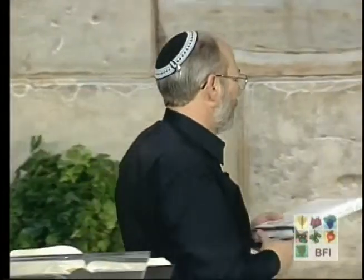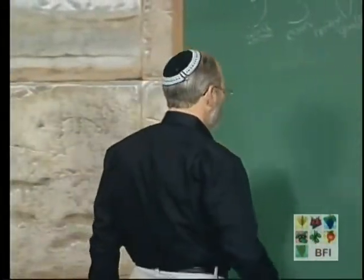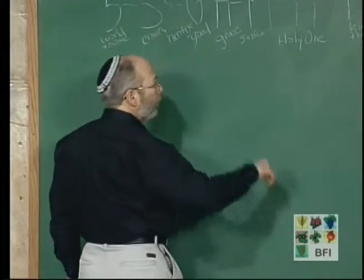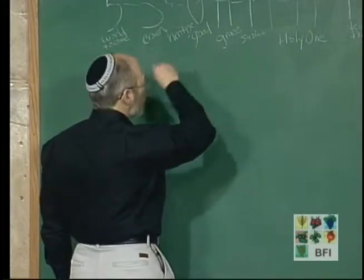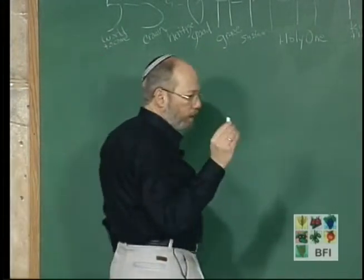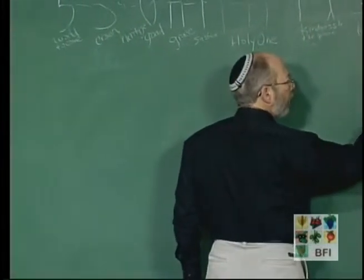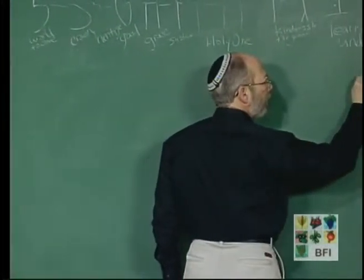We want to pick up where we left off. We covered the first twelve letters of the Hebrew alphabet, and now we want to try to finish it in this program. Let's go back to the board. The next letter that we need to talk about is the letter MIM.